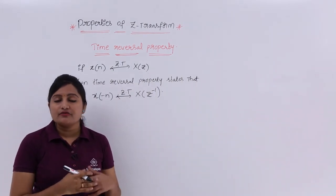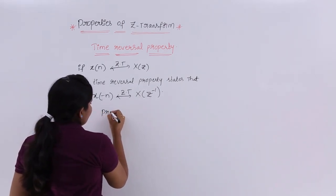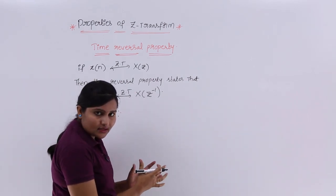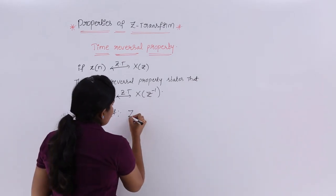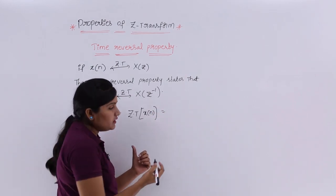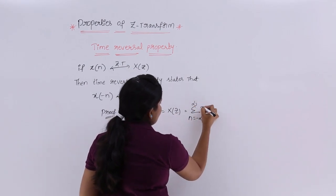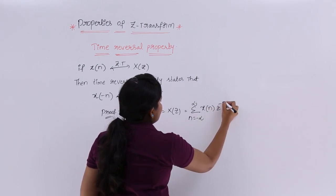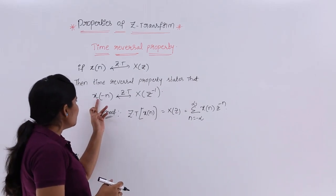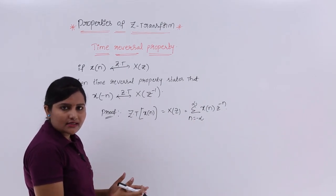Now I am going to prove this property and after that consider some examples. For proof, I am going to use the Z-transform equation. The Z-transform of X(n) is calculated using the formula: summation from n = -∞ to ∞ of X(n)·Z^(-n). What we need to prove is that the Z-transform of X(-n) is equivalent to X(Z⁻¹).